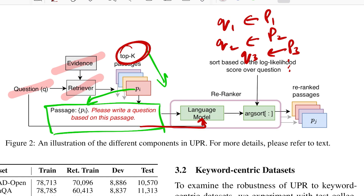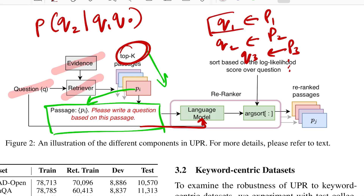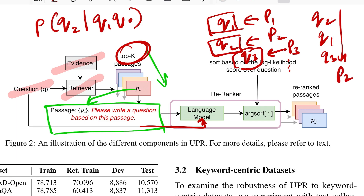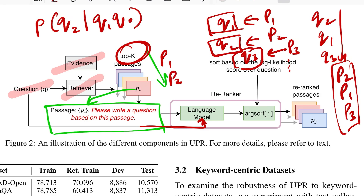The model generates Q1 for P1, Q2 for P2, Q3 for P3, and so on. This generation happens word by word — you calculate the probability of each next word given what's been generated so far. Multiplying these gives the likelihood of the entire question. You then sort passages based on this likelihood score. For example, if Q2 ranks highest, then Q1, then Q3, your new passage ranking becomes P2, P1, P3 — instead of the original P1, P2, P3. That's the shuffling the re-ranker performs.